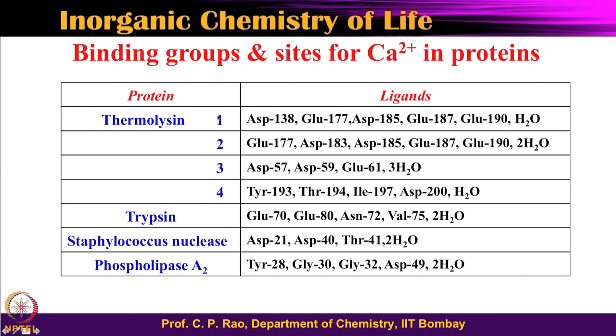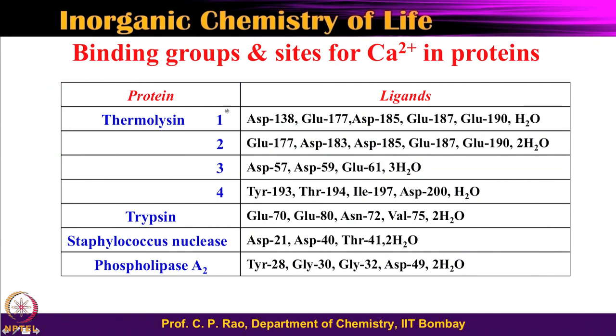Next, let us look at a few calcium proteins and examine how calcium 2+ is bound. Here is a table of crystal structures of different calcium-binding proteins. There are four calcium sites — calcium site 1, 2, 3, and 4. If you examine them, you see aspartic, glutamic, aspartic, glutamic, water — binding residues like that.